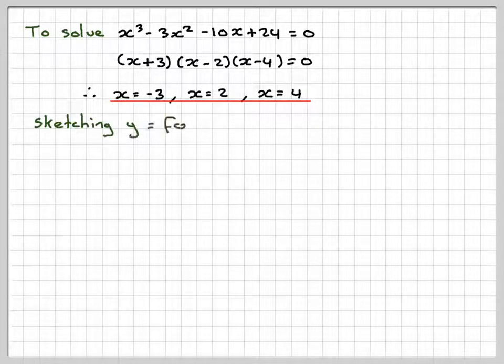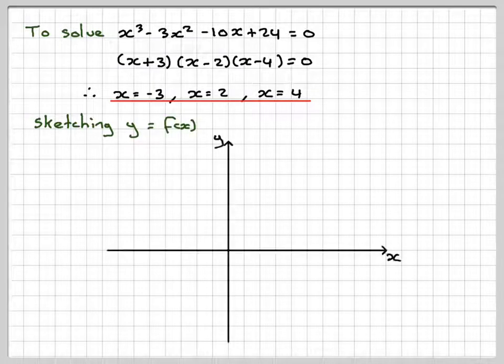For the sketch, if we draw a set of y-axes, we can put on these points. So x = -3, x = 2, and x = 4 from here.